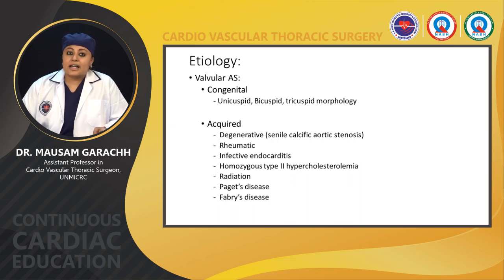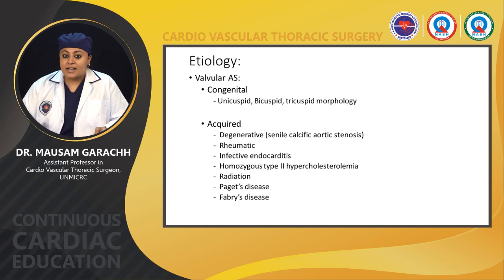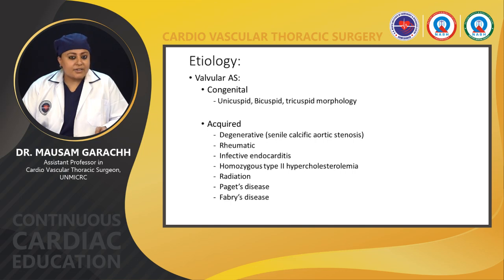In etiology, it can be congenital, in which it can have unicuspid, bicuspid, or tricuspid morphology, and acquired. In acquired, the common cause is degenerative — that is senile calcific aortic stenosis. It can be rheumatic, due to infective endocarditis, homozygous type 2 hypercholesterolemia, secondary to radiation, Paget's disease, or Fabry's disease.